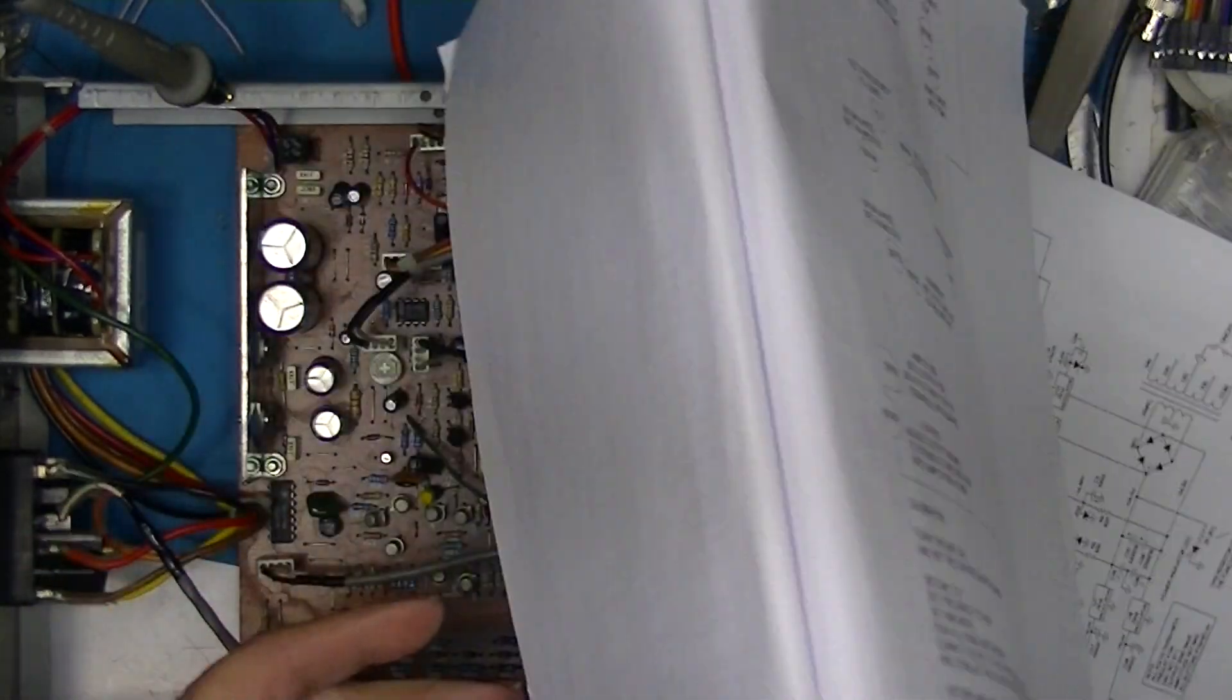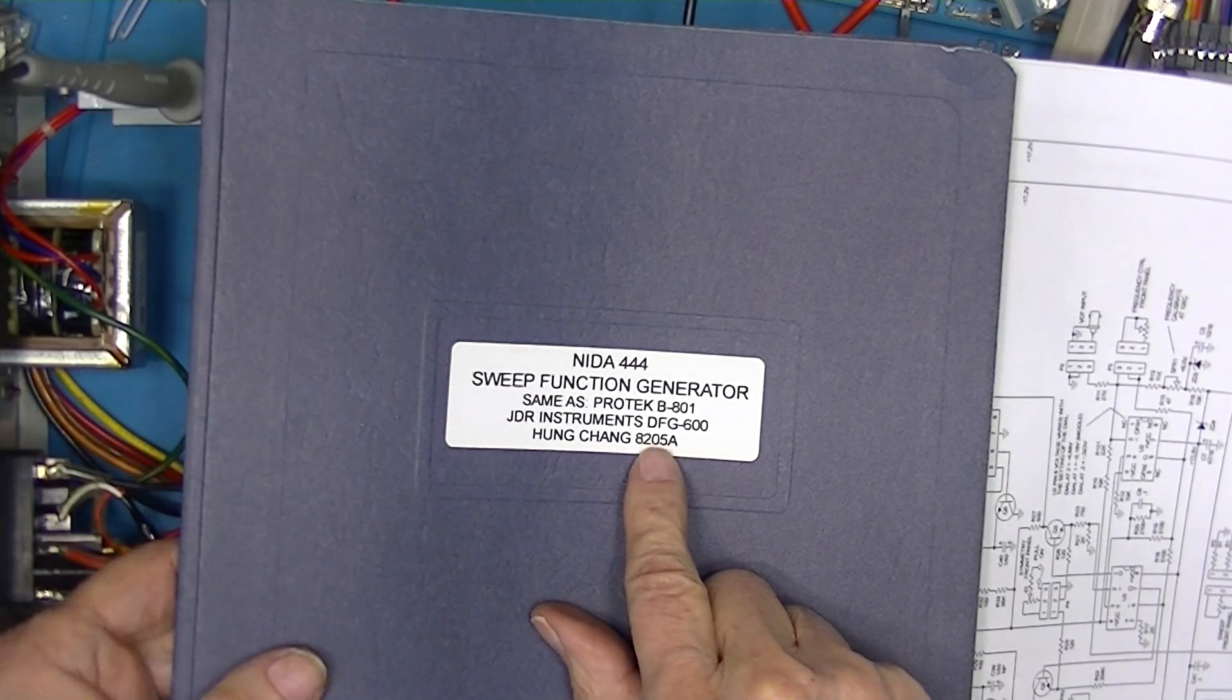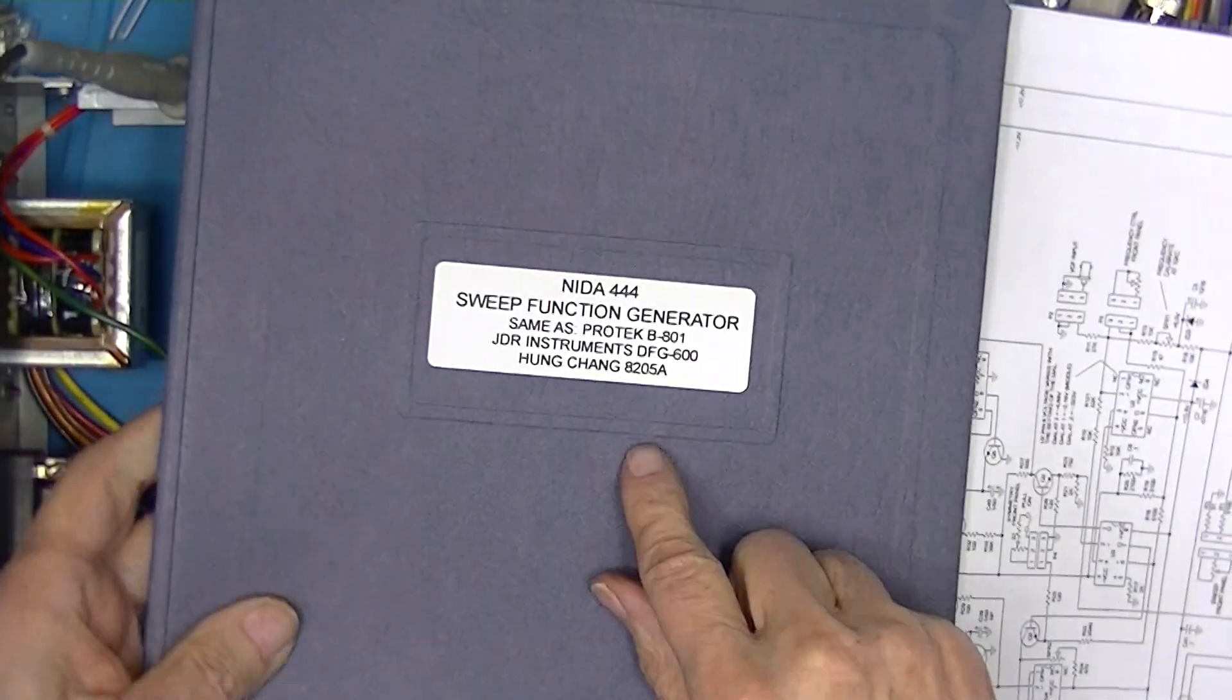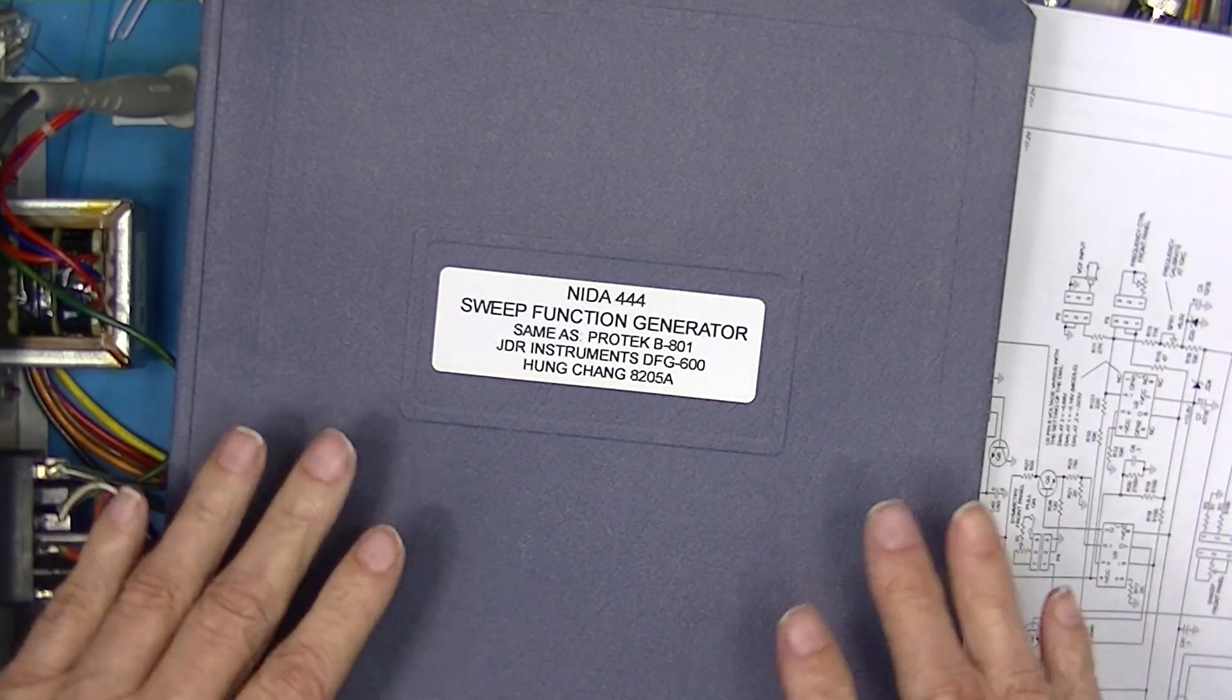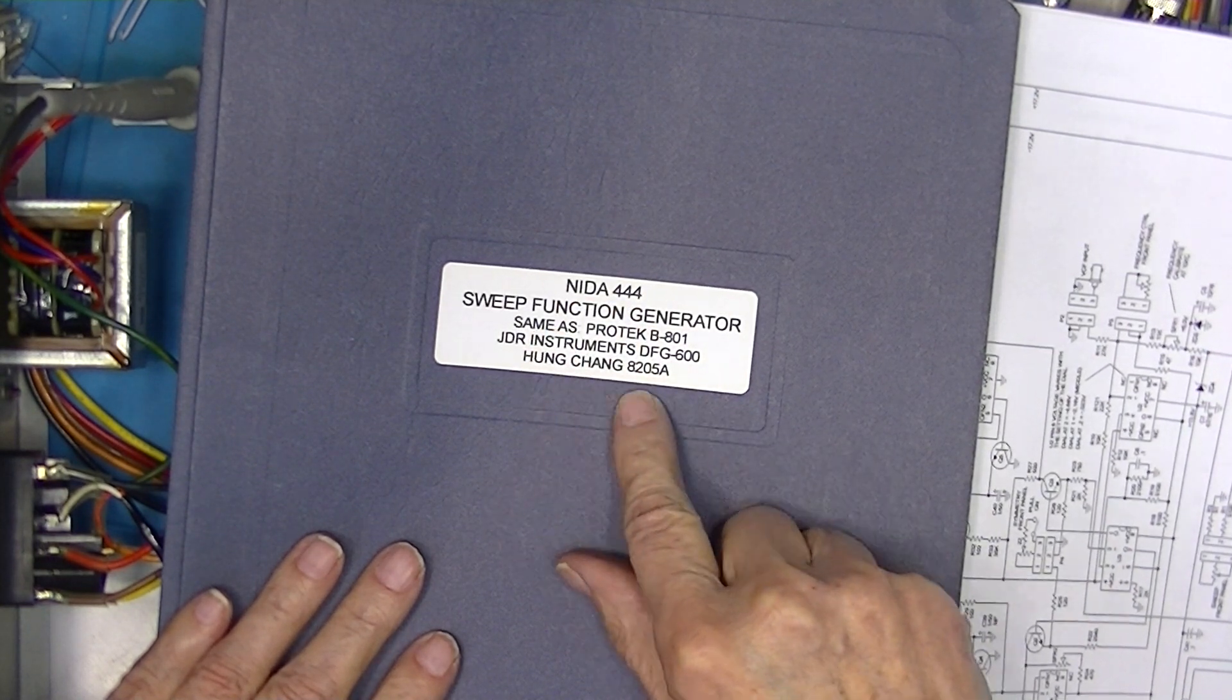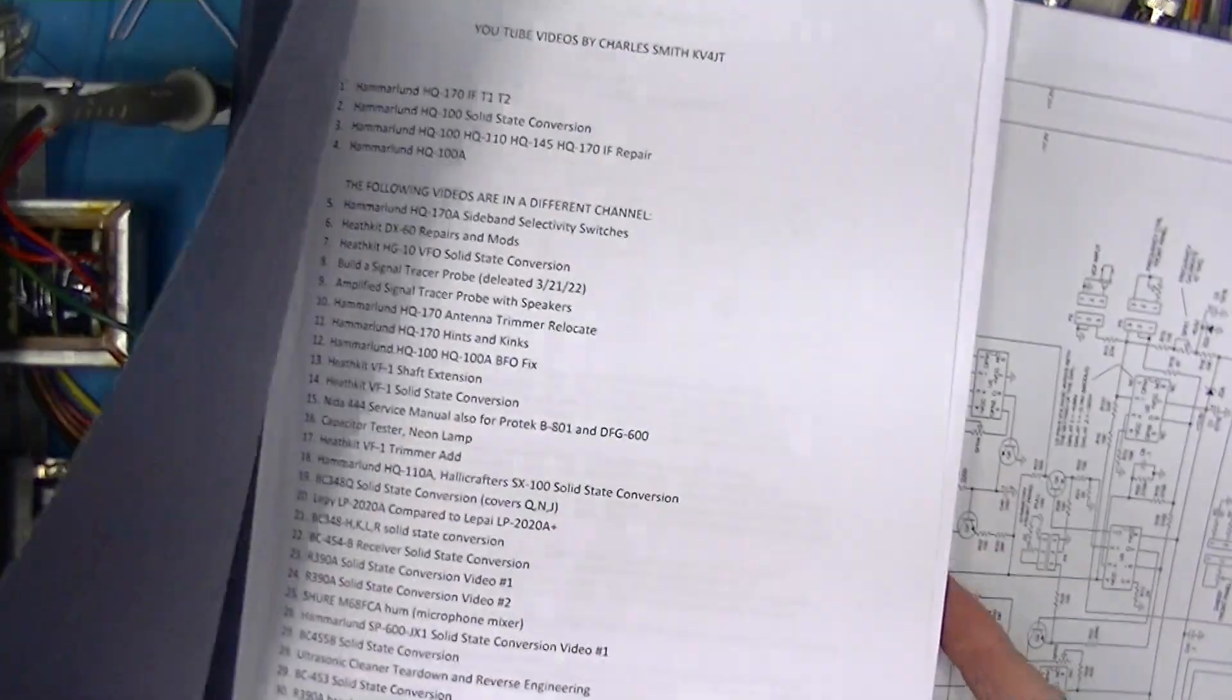So if you own one of these, this is the DFG 600 I believe. Yes. And this seems to follow exactly what I can find in here. I'm going to take the NIDA 444 apart and I'll perform the same kind of calibration on it.